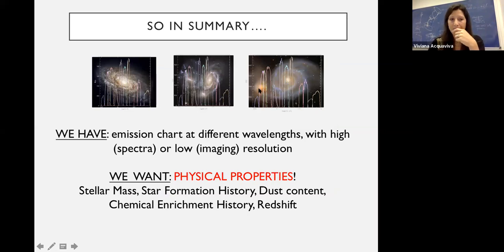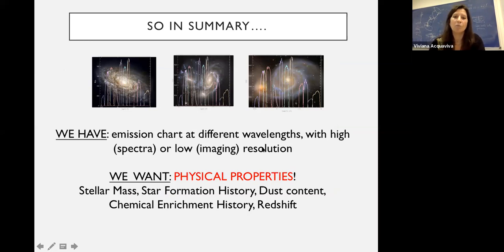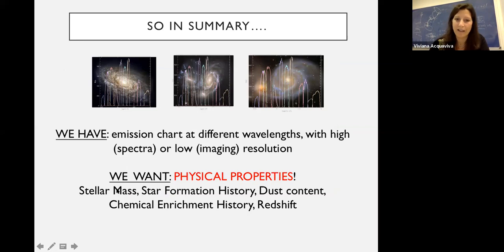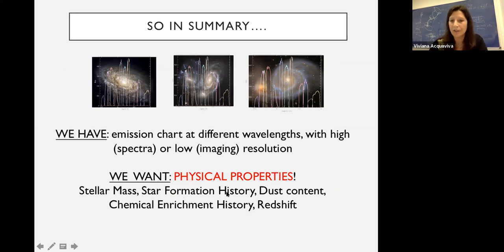What we have is brightness measurements at different wavelengths. With high resolution, we call this a spectrum; otherwise, it's imaging or photometry. What we really want to know about a galaxy is things like stellar mass, star formation history, dust content, chemical enrichment history, or redshift and distance. So how can we derive those from what we observe?